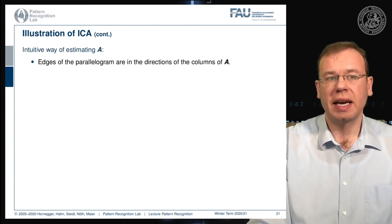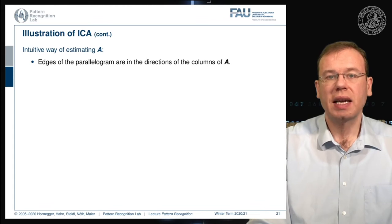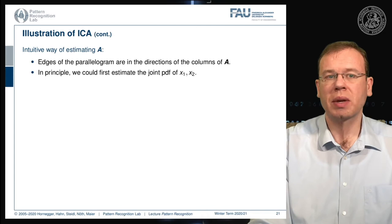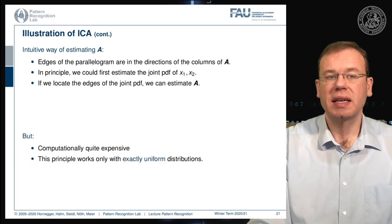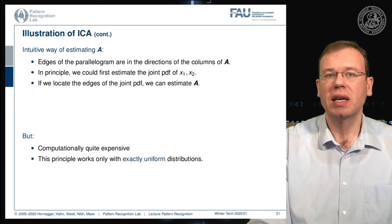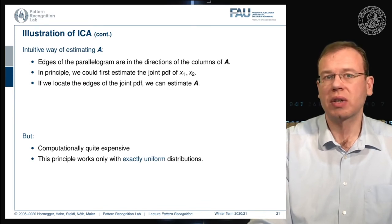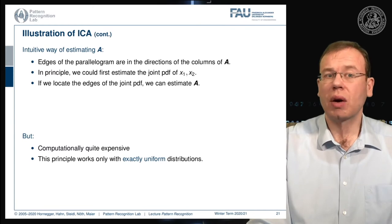To estimate A, the edges of the parallelogram correspond to the directions of the columns of A. In principle, we could estimate the joint pdf of x1 and x2 and locate its edges to estimate A, but this is computationally very expensive and only works exactly with uniform distributions. Since we want to handle any non-Gaussian distribution, this is not our general solution scheme.